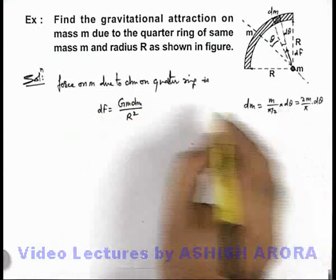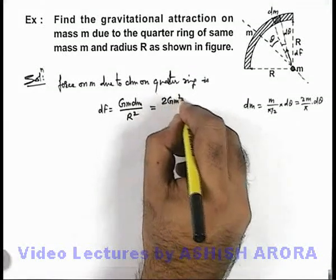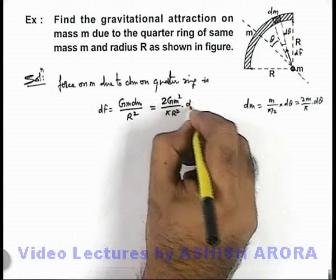And if we substitute the value of dm over here, this will give us 2Gm²/(πR²)·d-theta.